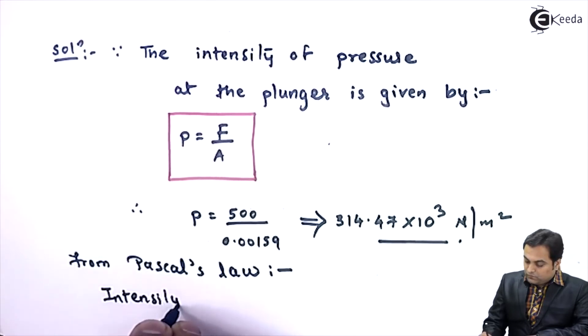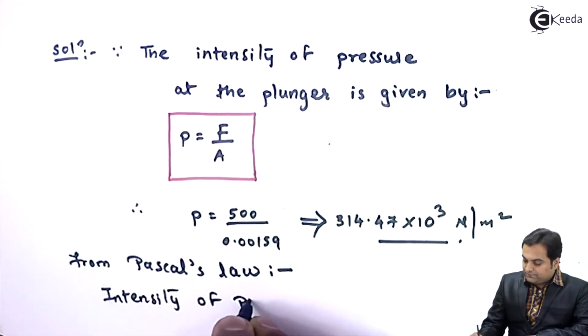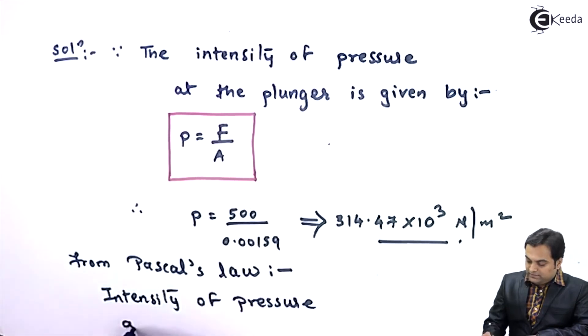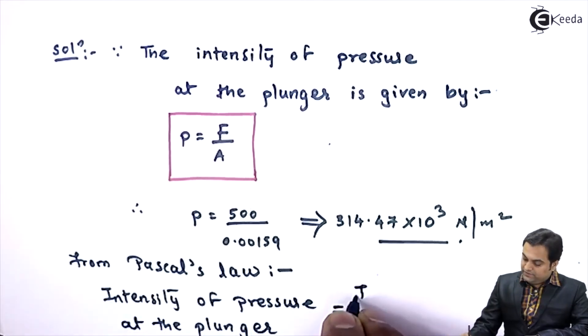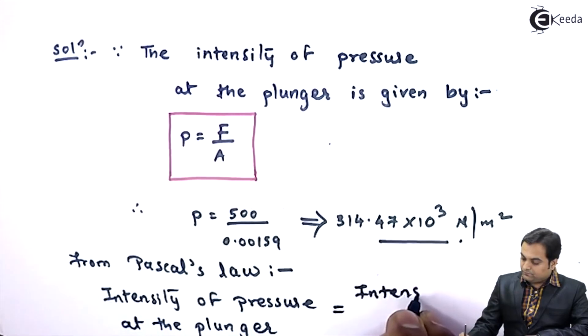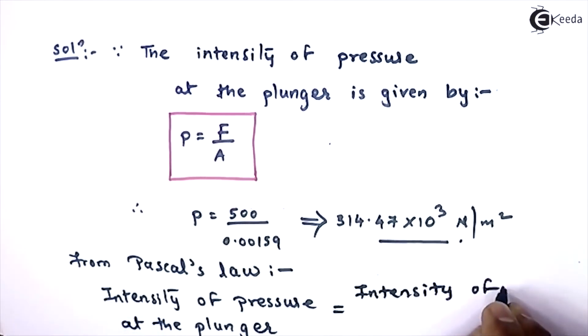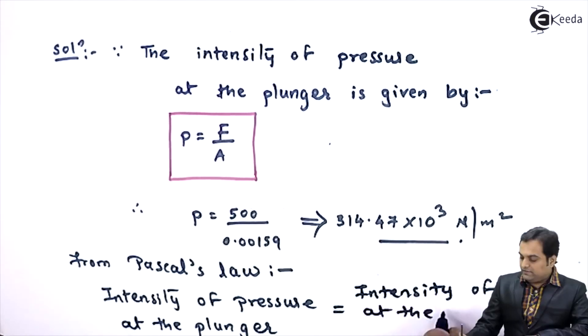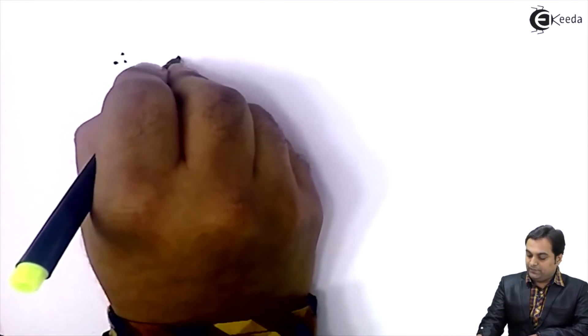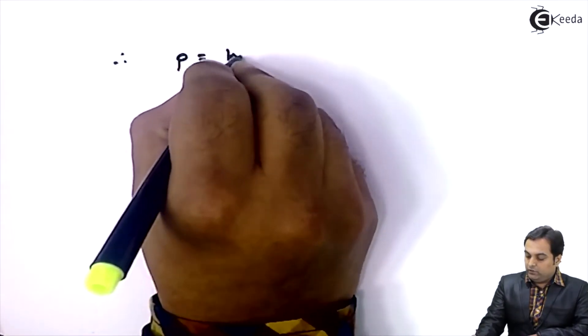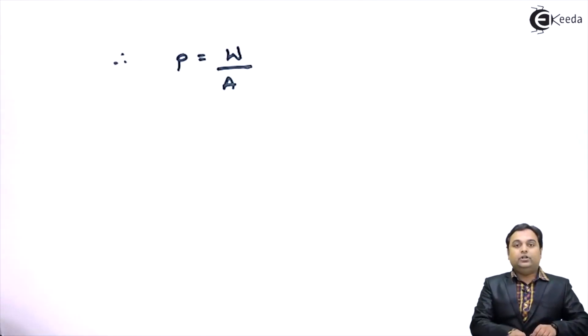intensity of pressure at the plunger is equal to the intensity of pressure at the ramp. So this same pressure will be there at the ramp. I'll write down, therefore the intensity of pressure p is equal to load upon area. Because at the ramp the load which is lifted, that is W.